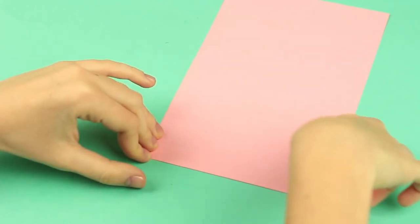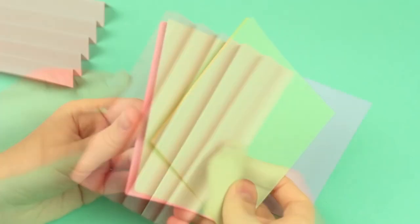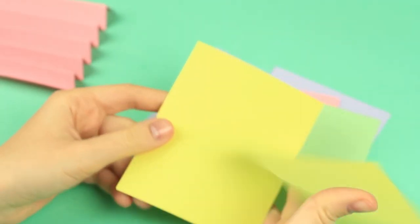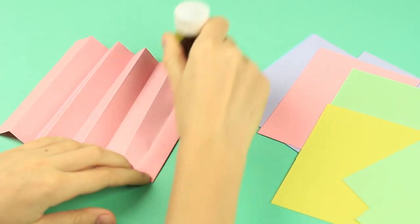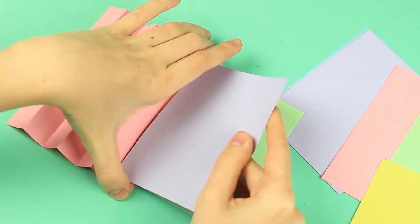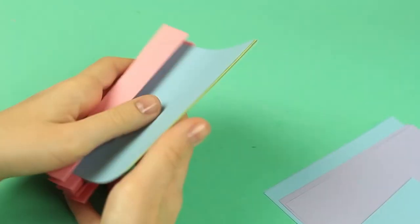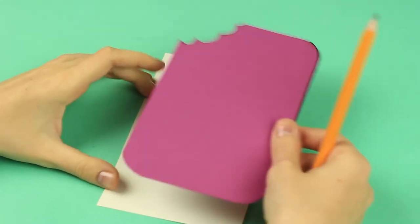Fold color paper accordion style to attach pages. Choose color pages to make leafing through them fun. Add glue to an accordion pleat, attach a page, and continue gluing the pages. Make a back cover.